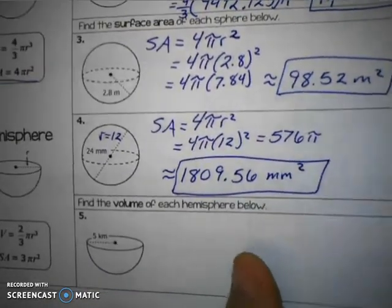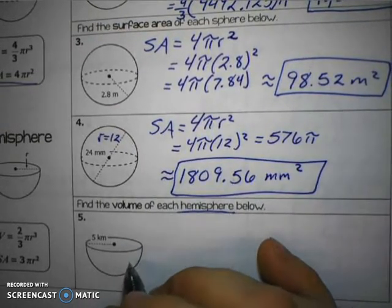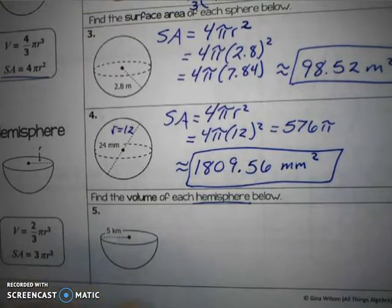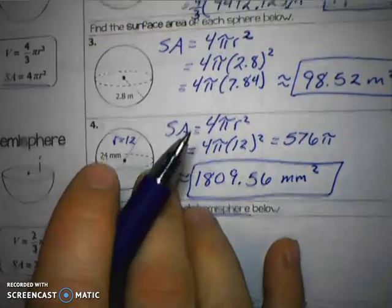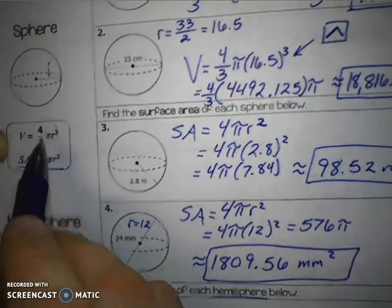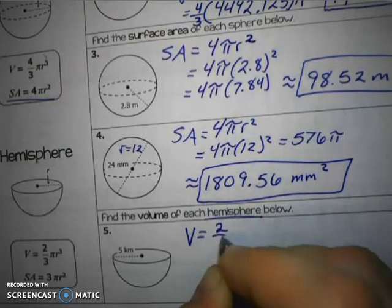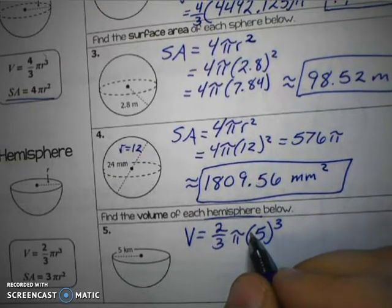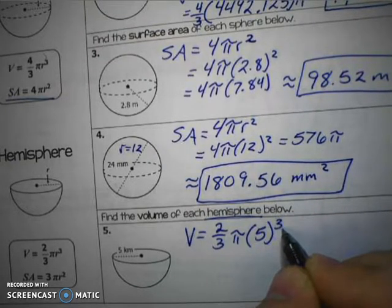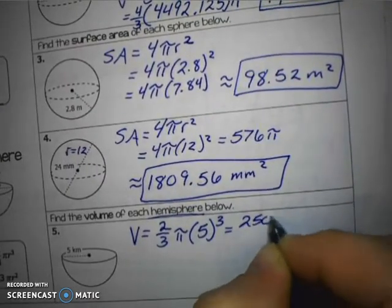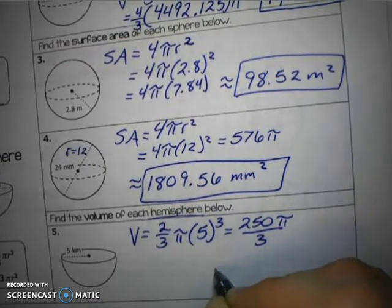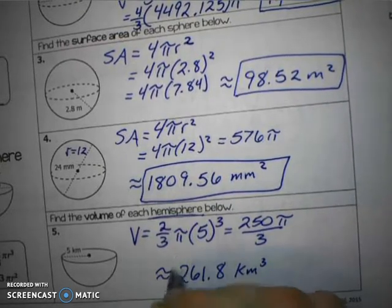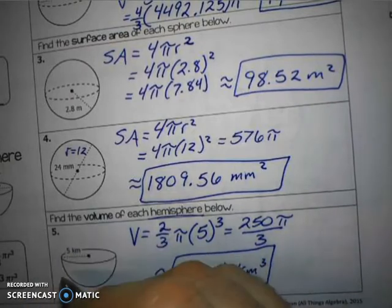For the next couple of examples, we're going to find volume of hemispheres. Hemispheres are just spheres cut in half, so the formula for volume of a hemisphere is 2/3 π r cubed — you can get this by taking the sphere volume formula and dividing by 2. With a radius of 5 kilometers, we do 5 to the third power, which is 125, times 2 is 250, then divide by 3 and multiply by π, giving approximately 261.8 cubic kilometers.